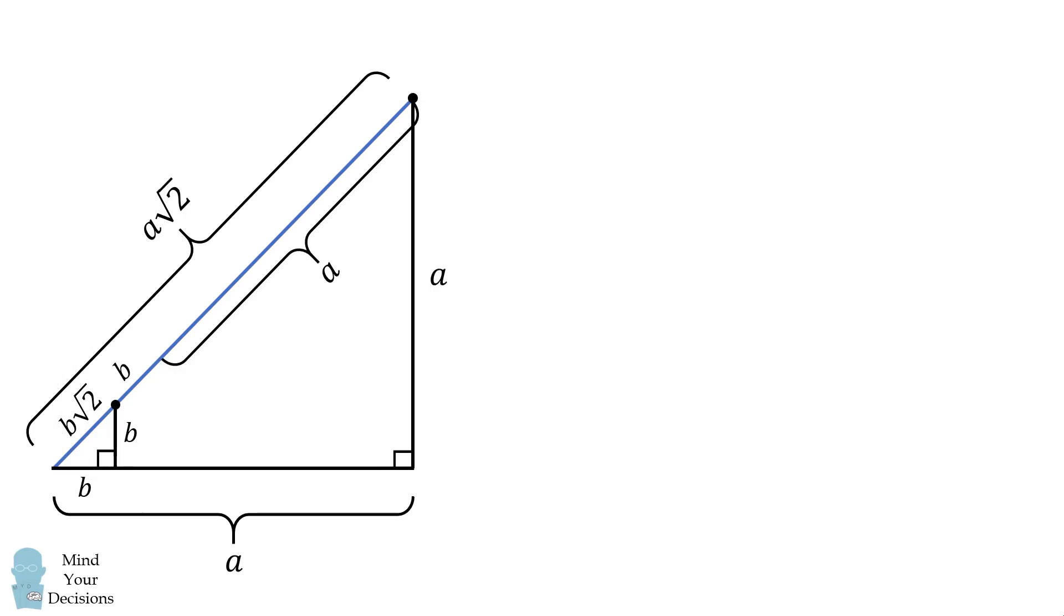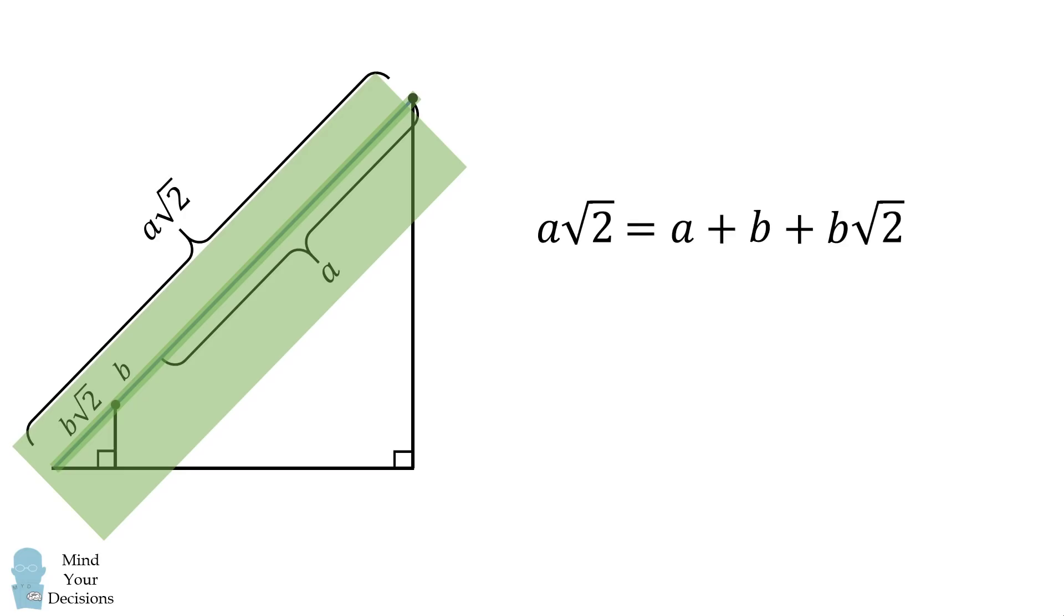We'll now focus on just these triangles, and in particular, we'll focus just on the hypotenuse. The entire hypotenuse has a length equal to a times the square root of 2. It also has a length equal to the sum of these individual lengths. This will be equal to a plus b plus b times the square root of 2.